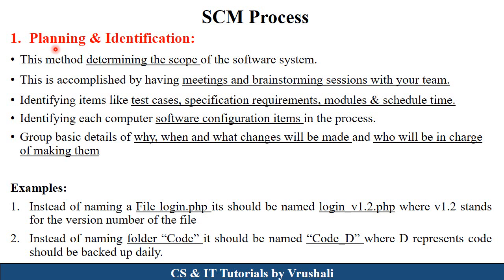The first step of SCM process is planning and identification. Here, the configuration manager identifies the scope and objective of the particular software project. For that purpose, they arrange meetings, group discussions, and brainstorming sessions with the software team and different stakeholders. The configuration manager identifies different test cases, requirements, different modules, and the schedule of the particular project. They also identify software configuration items — meaning which type of hardware resources, software resources, and human resources are used. Basically, they maintain details of why, when, what changes will occur, and by whom all these changes are performed.